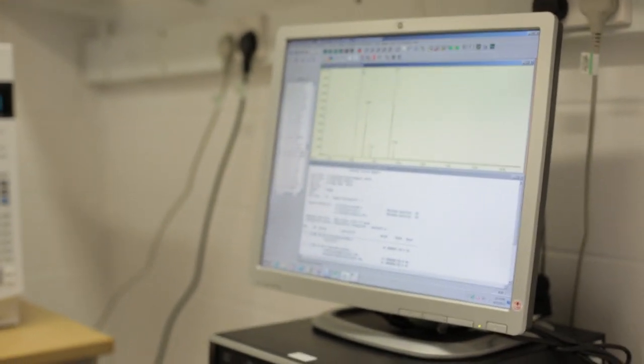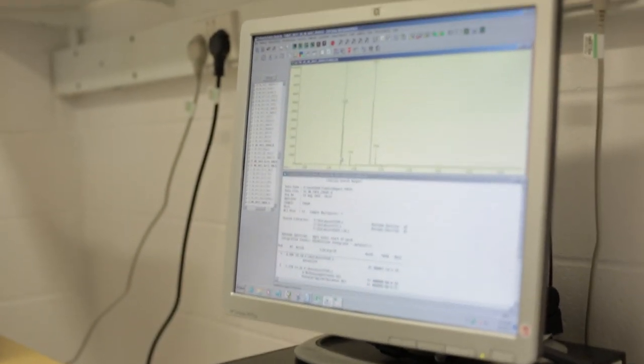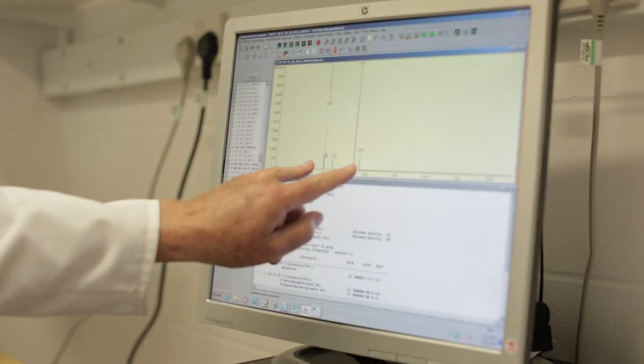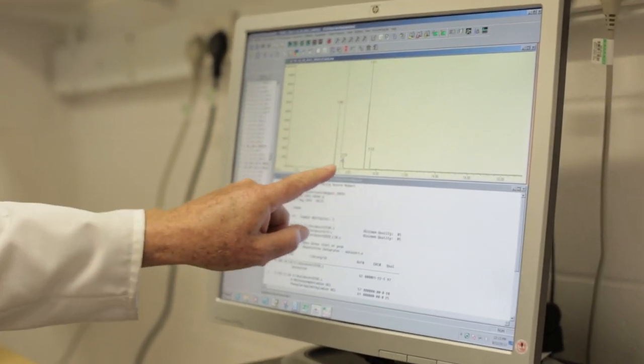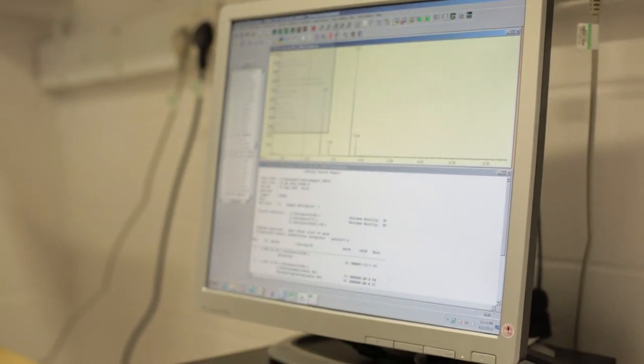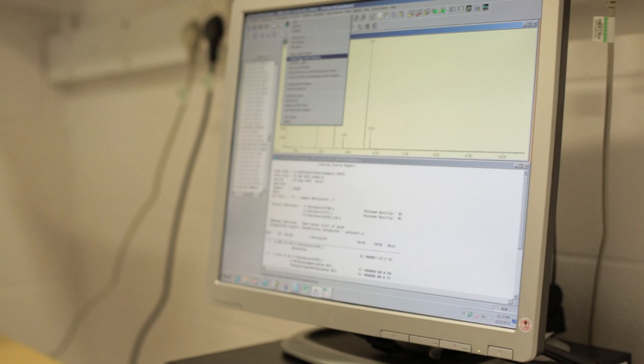So now it's taken 19 minutes for the chromatogram to run, so now we can look at the results. And what we have on the computer screen is the chromatogram which shows the components of the mixture. We add two internal standards so we know what these compounds are, and these are the two peaks of interest. And we can get the computer to search its library to tell us what they are.